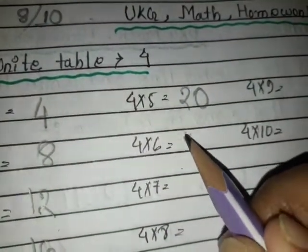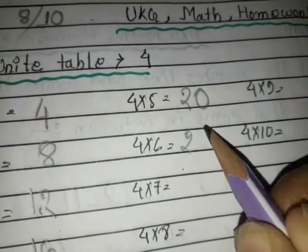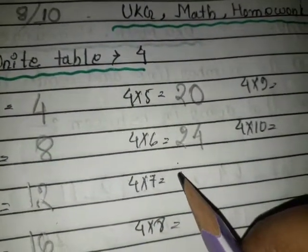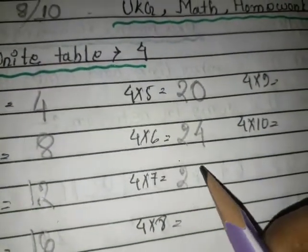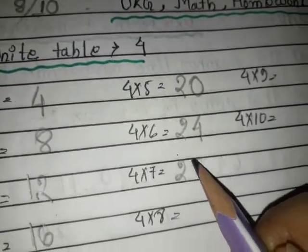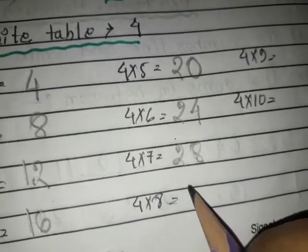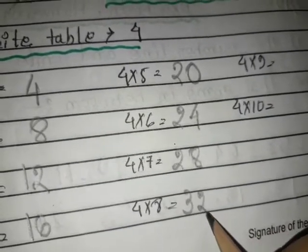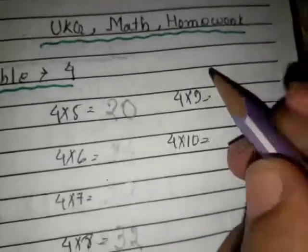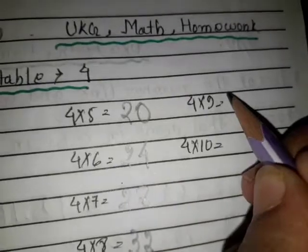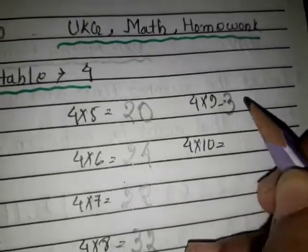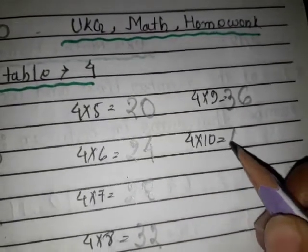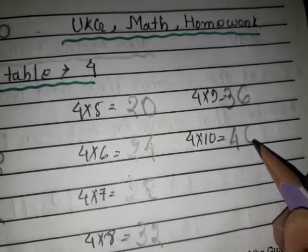4 6's are 24. 4 7's are 28. 4 8's are 32. 4 9's are 36. 4 10's are 40.